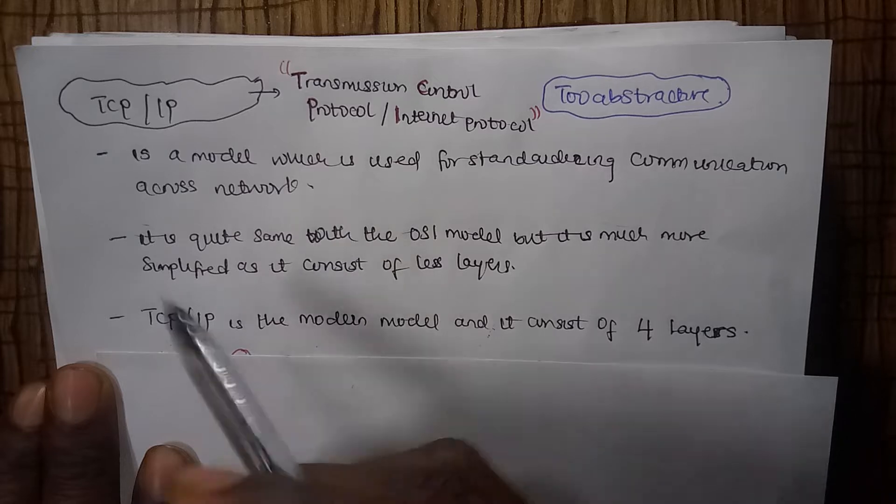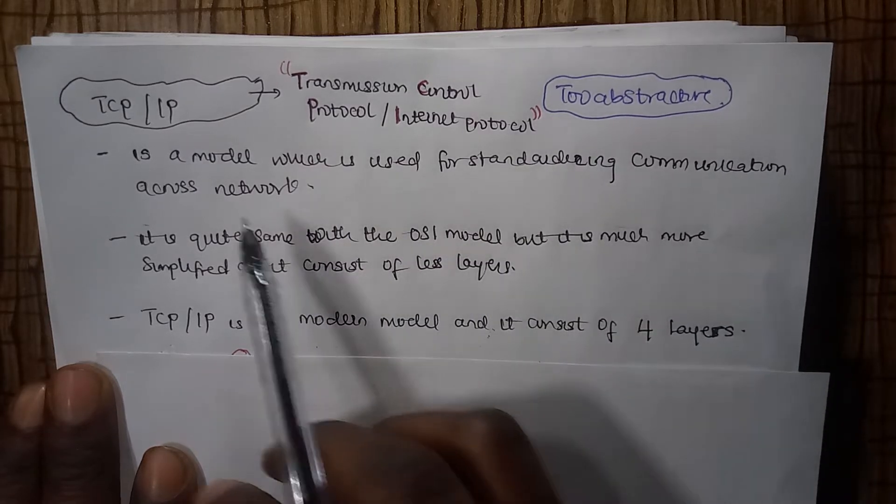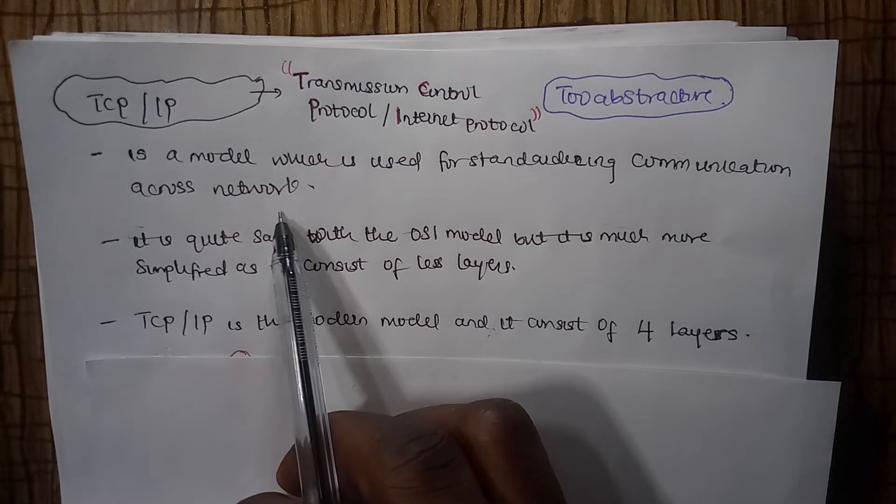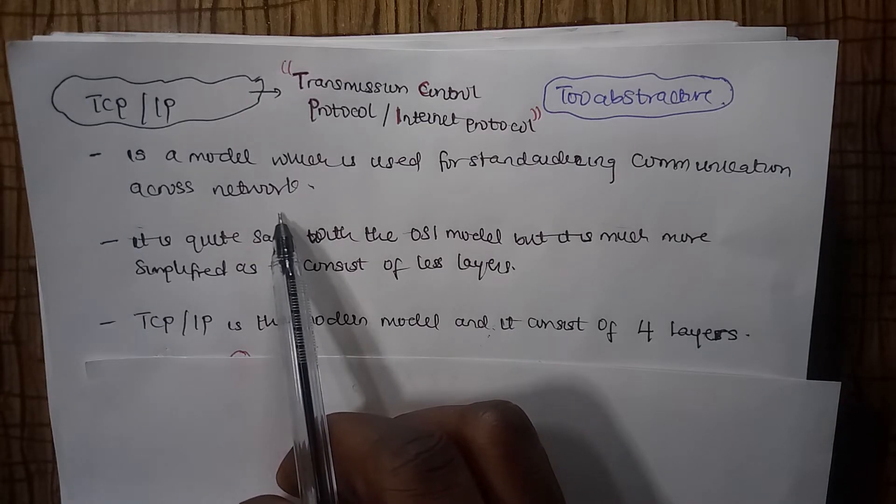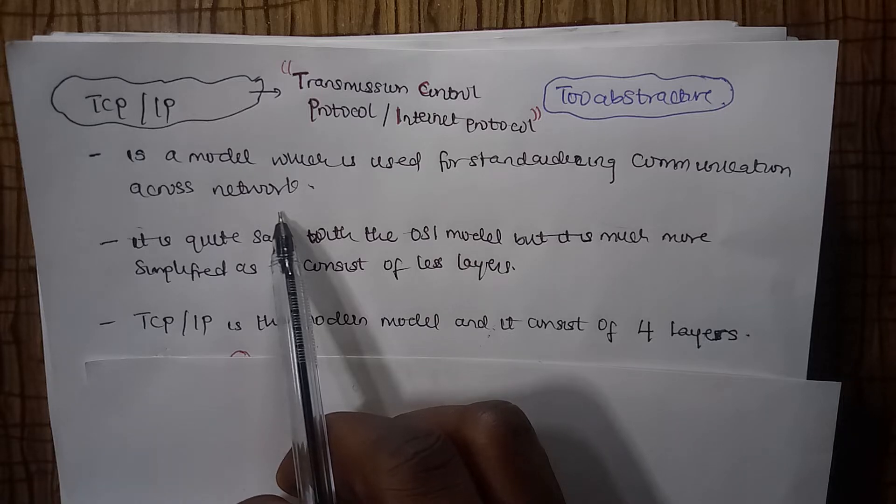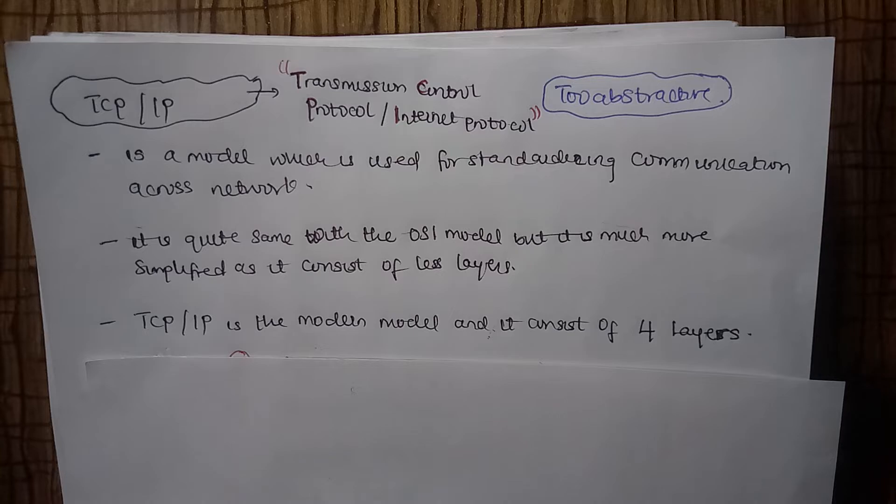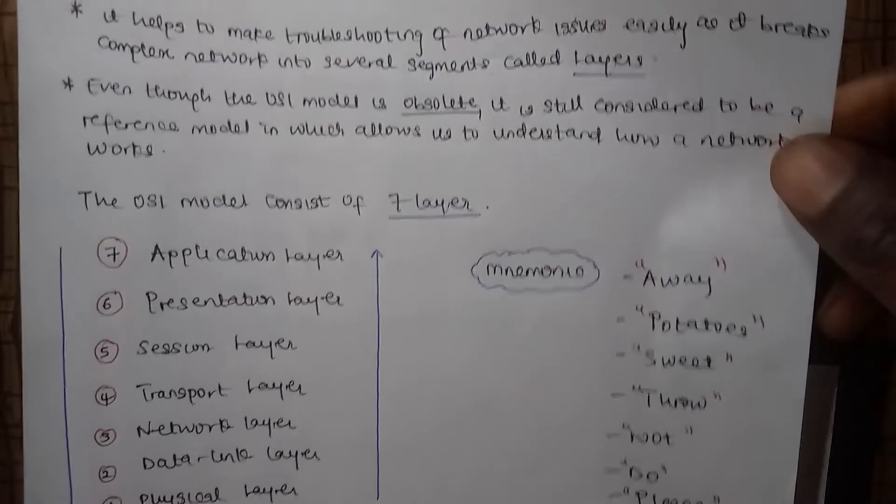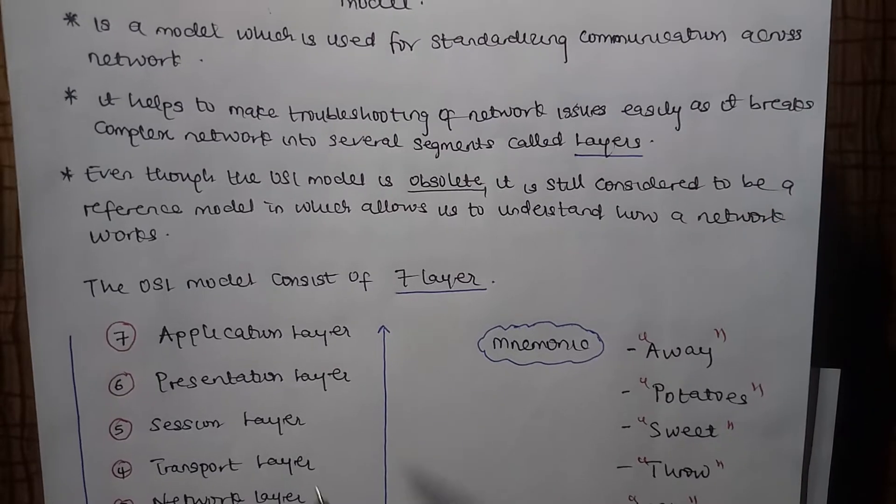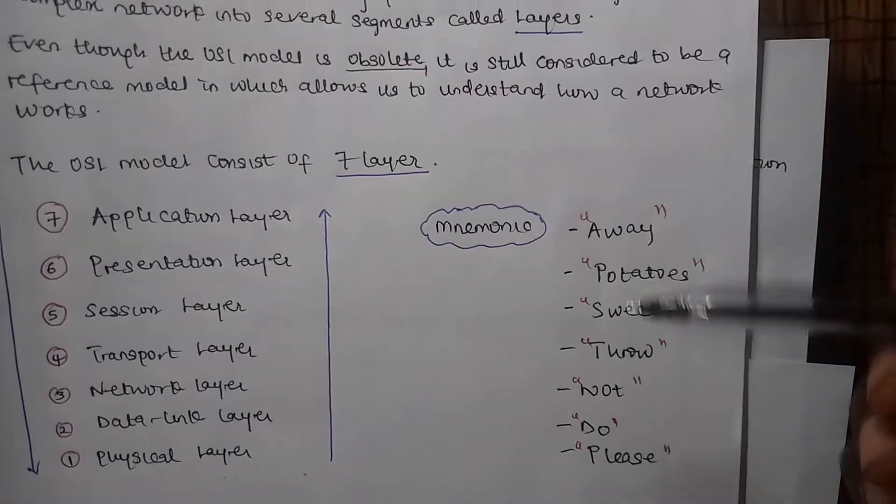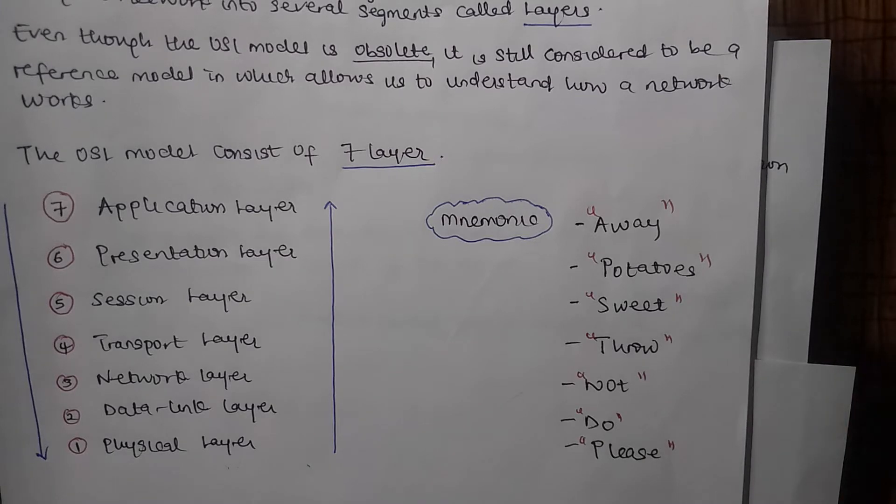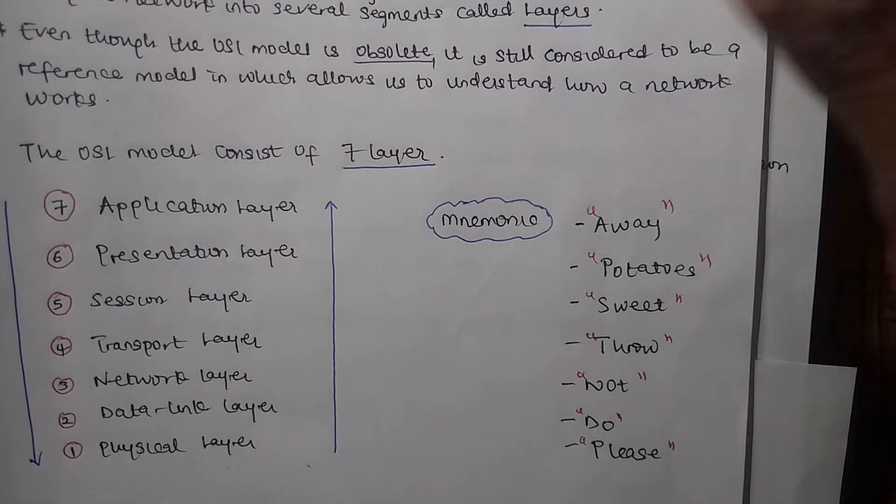This is a model which we use for standardizing communication across networks. It is the latest or modern model, as opposed to the OSI model which we discussed in the previous video, which is obsolete and no longer used. The OSI model consists of seven layers, and you can remember those layers using a mnemonic. You can check that video out.